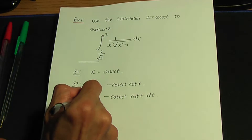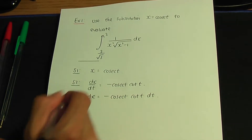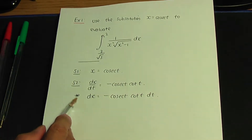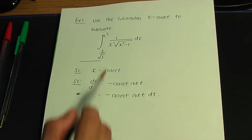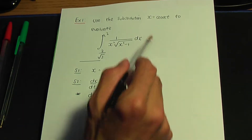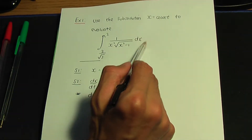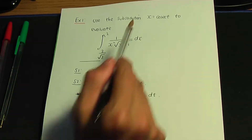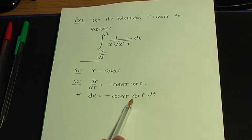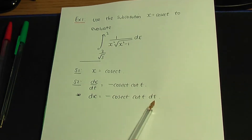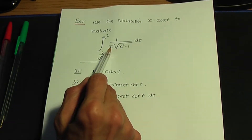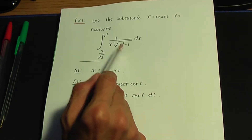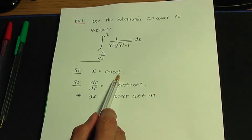This is where I like to stop and think — black star means stop and think. If we go back to this integral we can replace the dx by minus cosec t cot t dt, and we can replace the x's by cosec t.